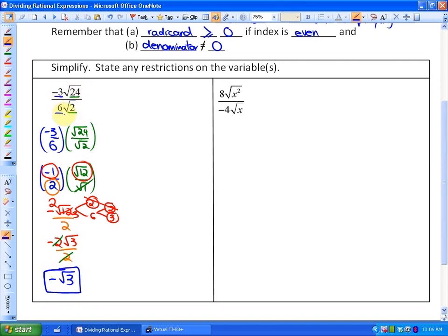If you want to simplify first, let me show you an alternative method. You could simplify the square root of 24 first. Square root of 24 would be 2 times 12, which is 2 times 6, which is 2 times 3. If we take out a pair of 2s, we'll be left with negative 6 root, and inside our radicand is 2 times 3, which is 6, all over 6 root 2.